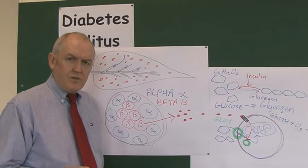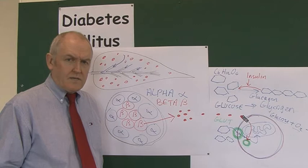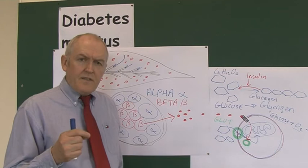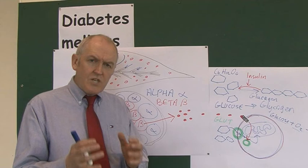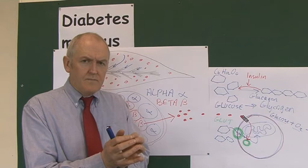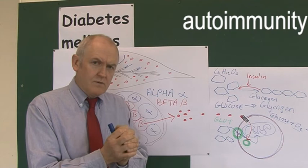Now we want to use this anatomy and physiology to identify the causes of type 1 and type 2 diabetes mellitus. In type 1 diabetes mellitus there is an autoimmune reaction, and what the body does is the body's own immune system starts destroying its own beta cells.